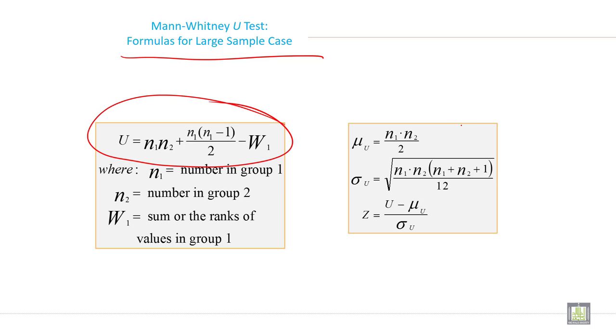Here the formula is this and what is N1 and N2? N1 is the number in group 1, N2 is the number in group 2, and what is W1? It is sum of the ranks of values in group 1.